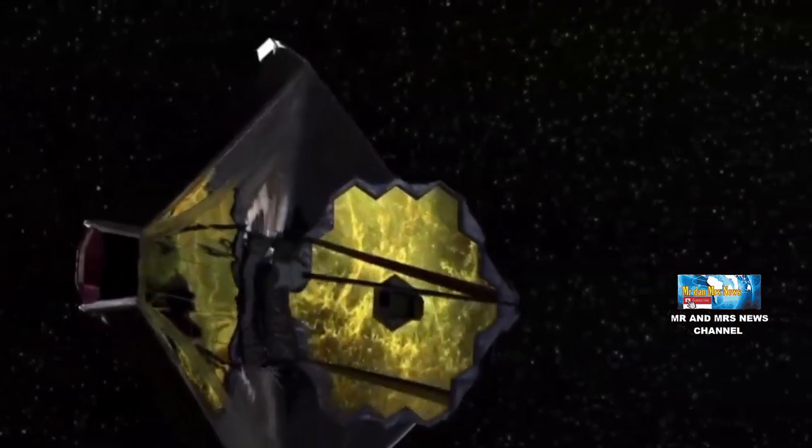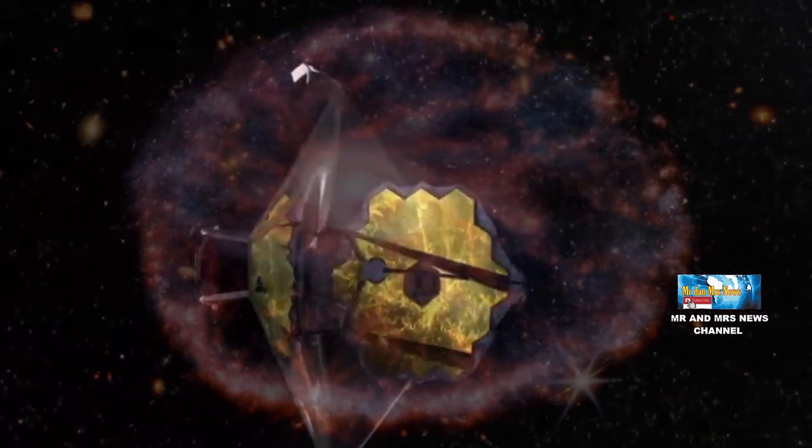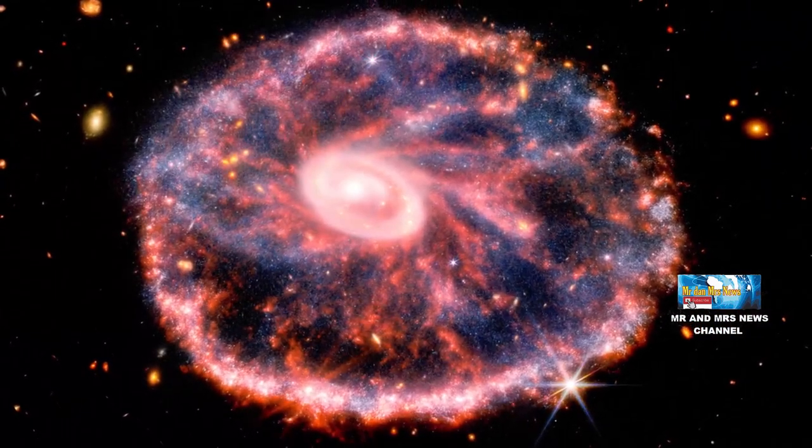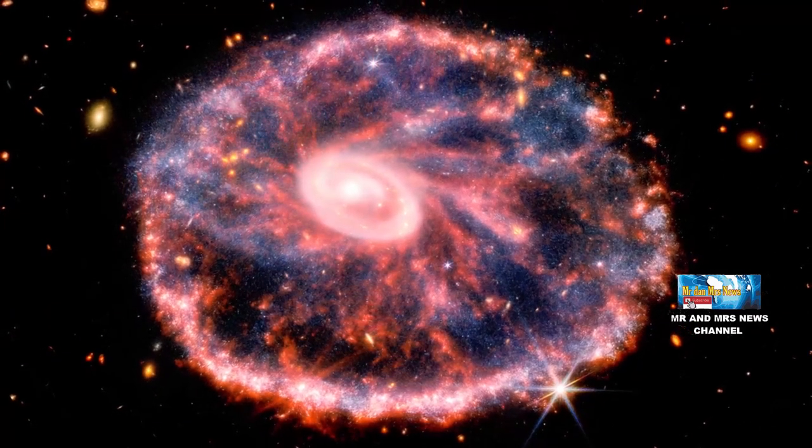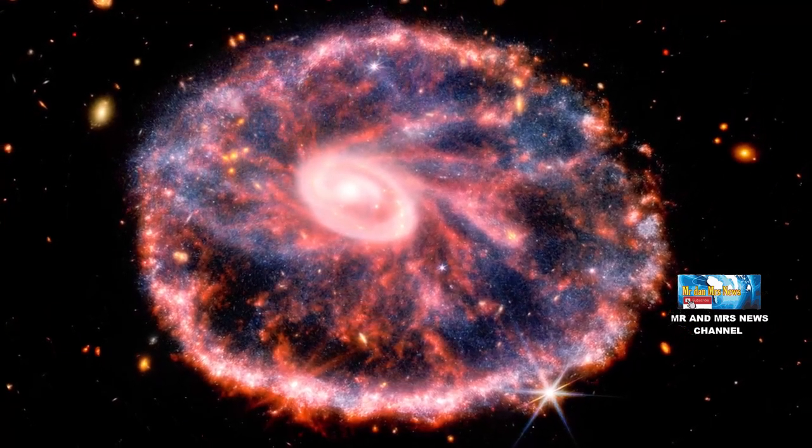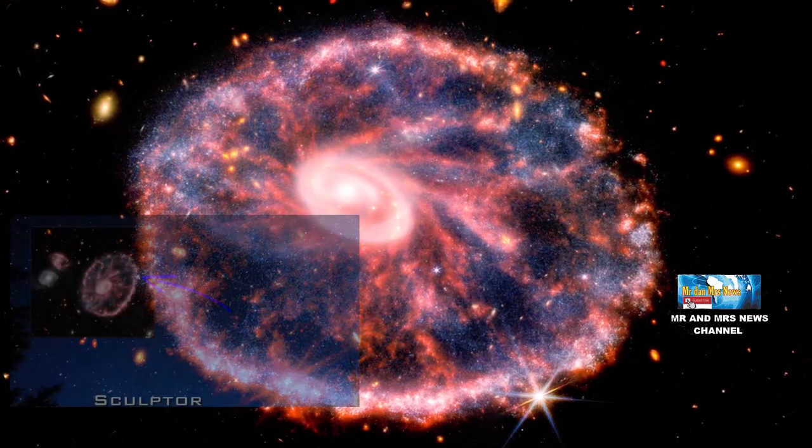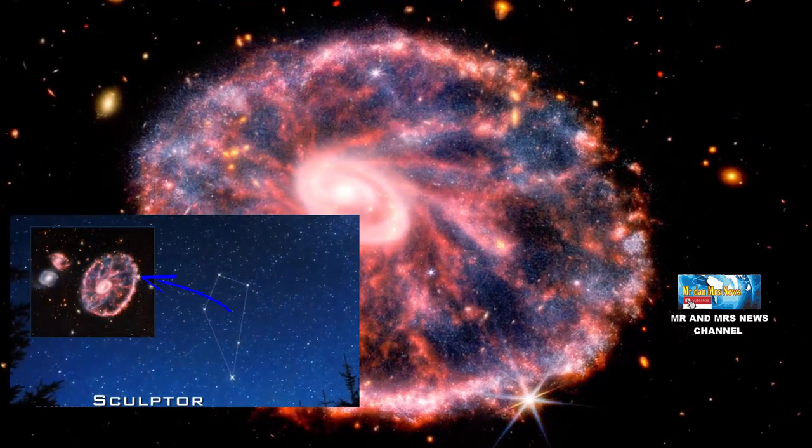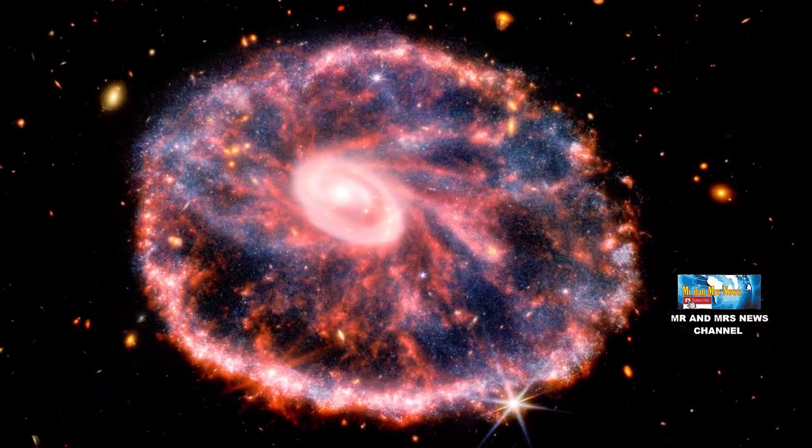Teleskop luar angkasa James Webb telah menangkap gambar baru galaksi Cartwheel yang memperhatikan cincin warna-warni dalam gambar yang lebih jelas. Terletak sekitar 500 juta tahun cahaya dari bumi di konstelasi Skulptor, Cartwheel terbentuk dari tabrakan yang spektakuler antara dua galaksi.